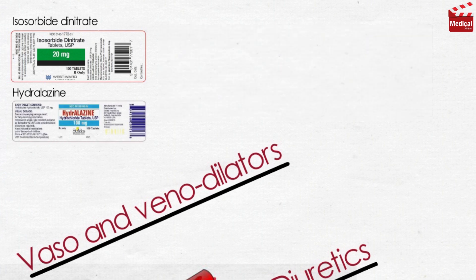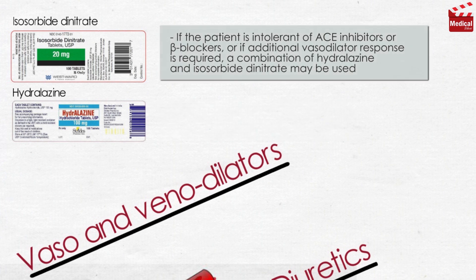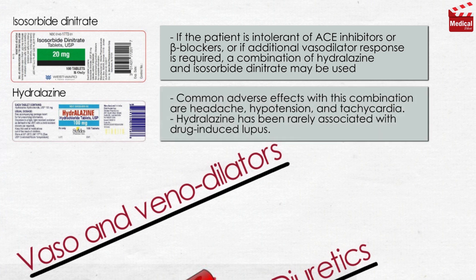Arterial dilators such as hydralazine reduce systemic arteriolar resistance and decrease afterload. If the patient is intolerant of ACE inhibitors or beta blockers, or if additional vasodilator response is required, a combination of hydralazine and isosorbide dinitrate may be used. Common adverse effects with this combination are headache, hypotension, and tachycardia. Hydralazine has been rarely associated with drug-induced lupus.